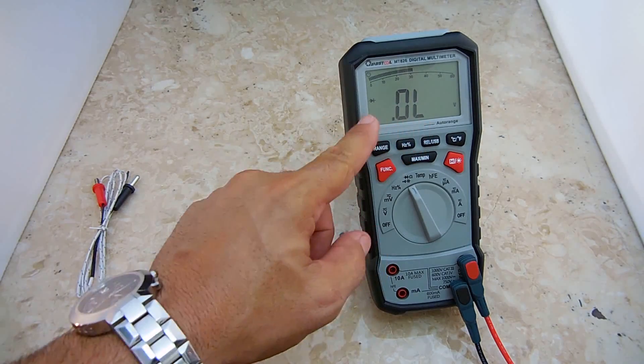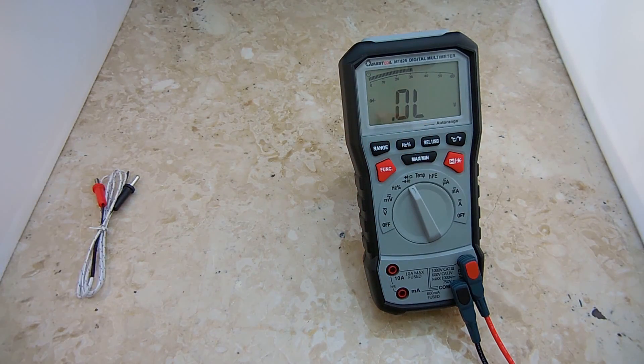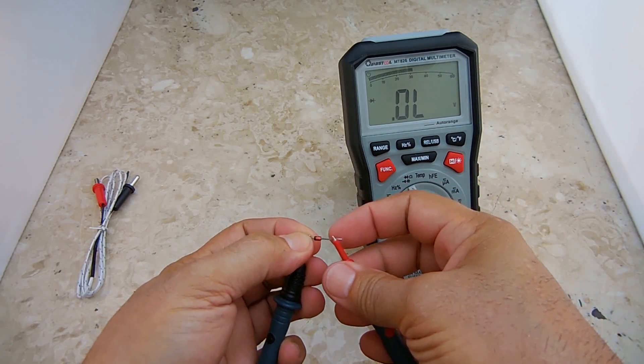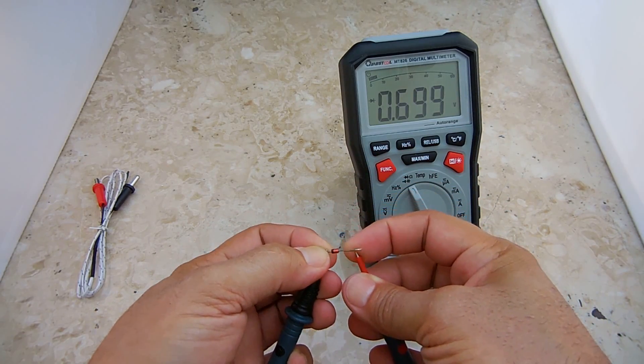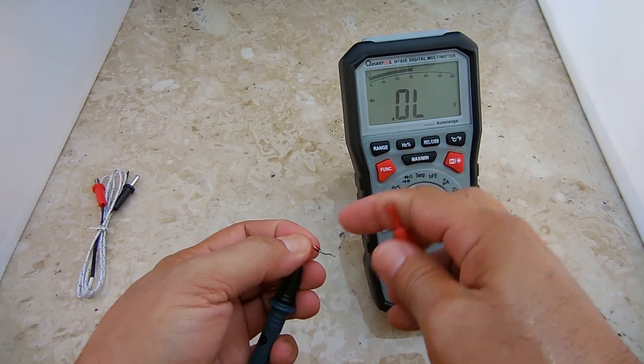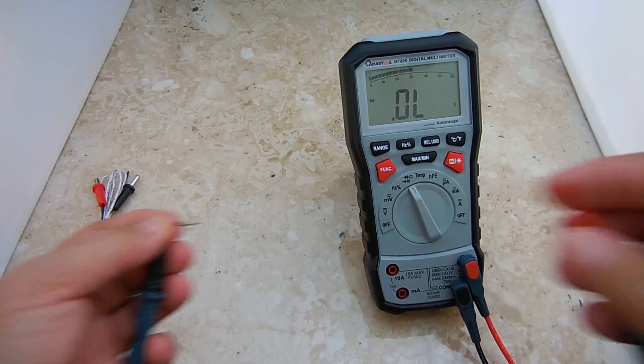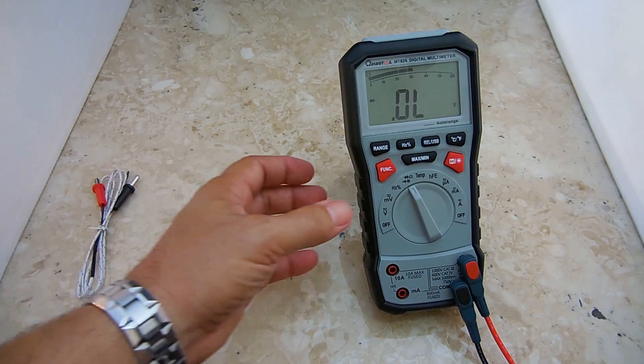Now you push the function button again. You'll leave the ohms and alarm range. Now you're on a diode test. When you test the diode this way you should have a reading around 0.7 and this way should be nothing.